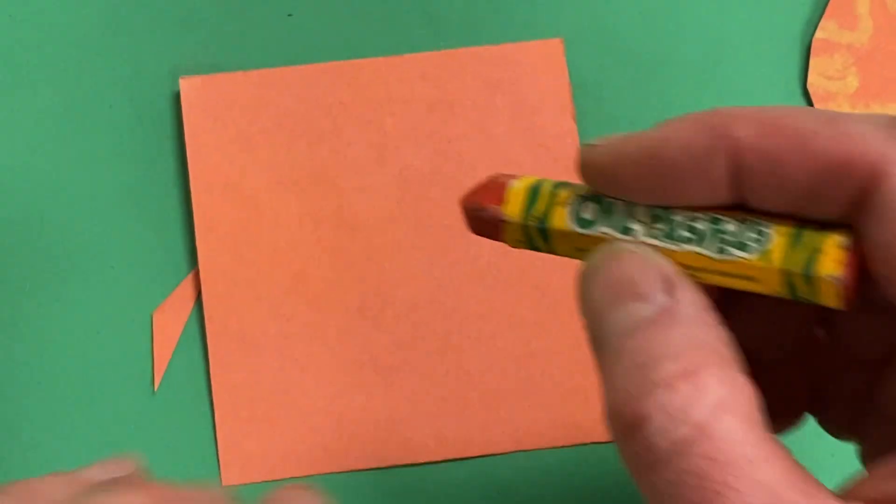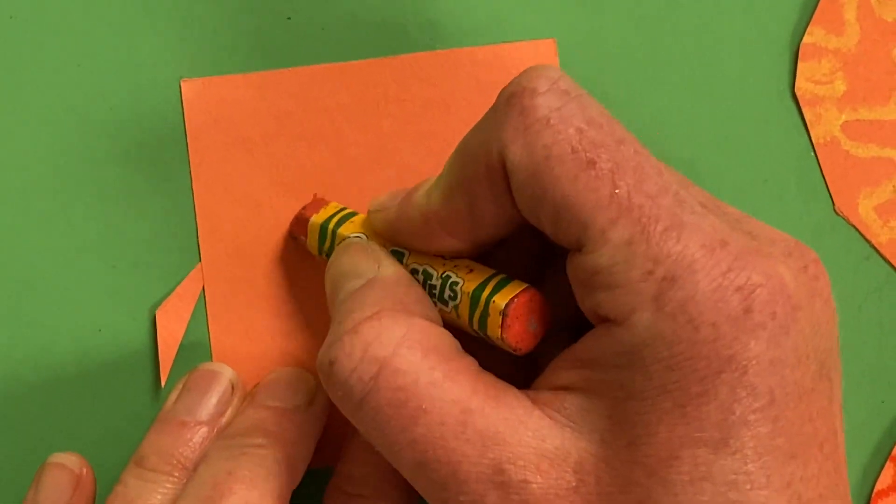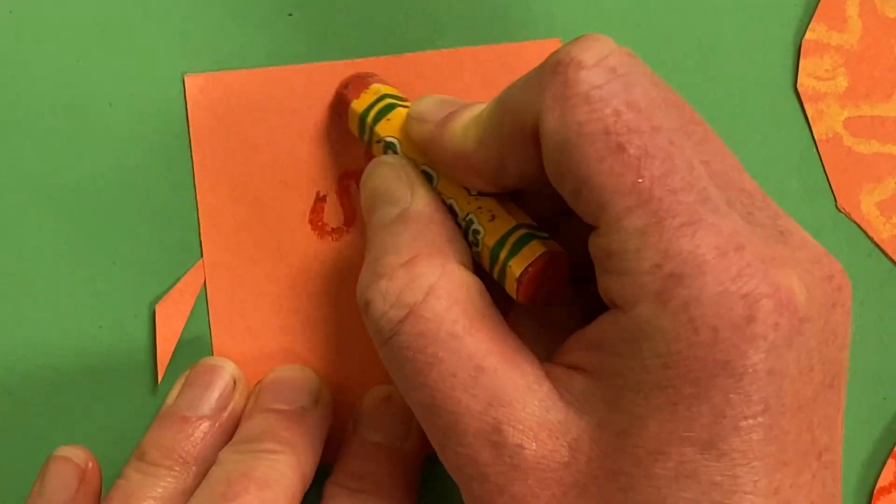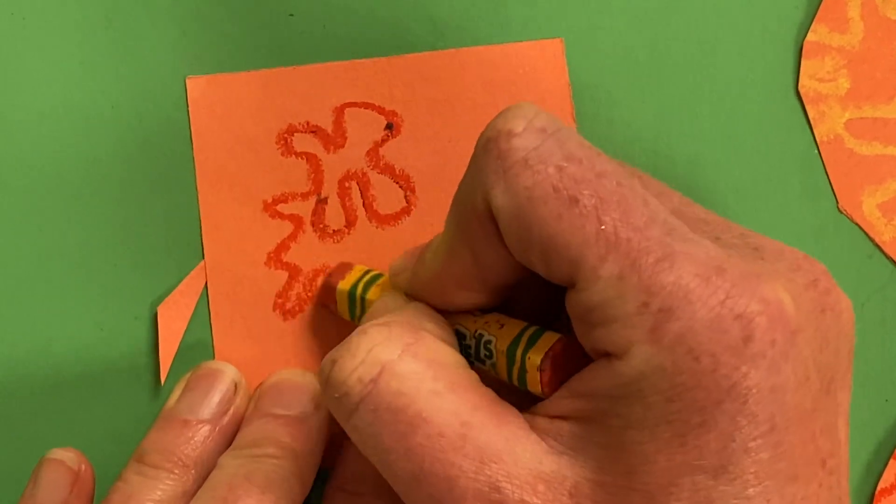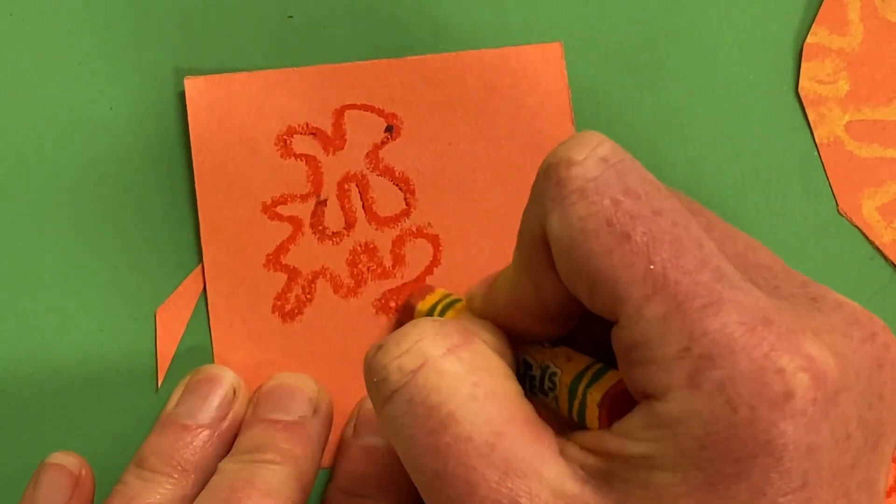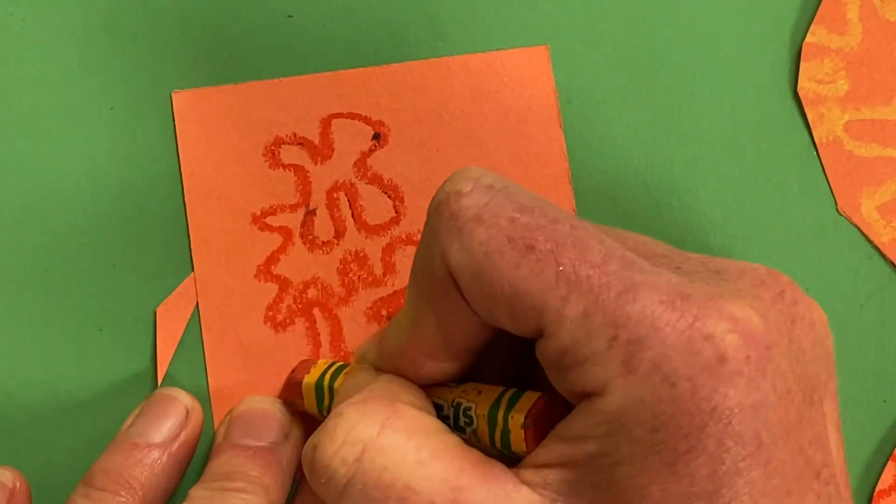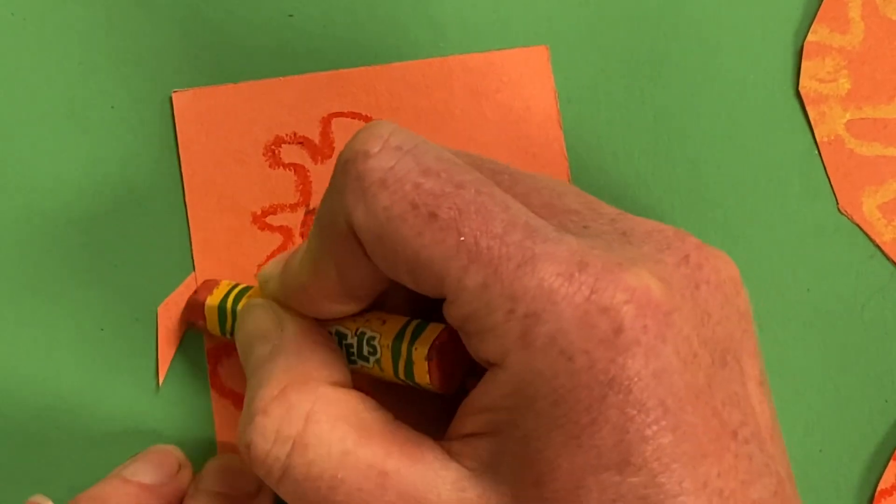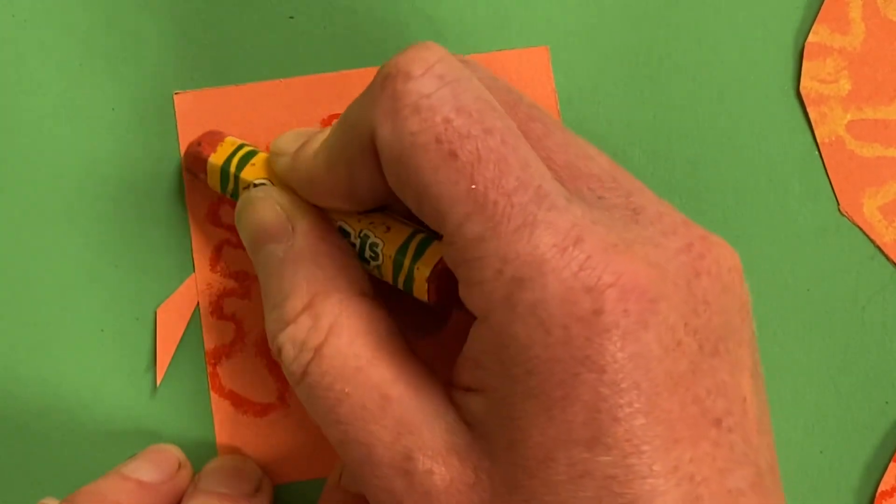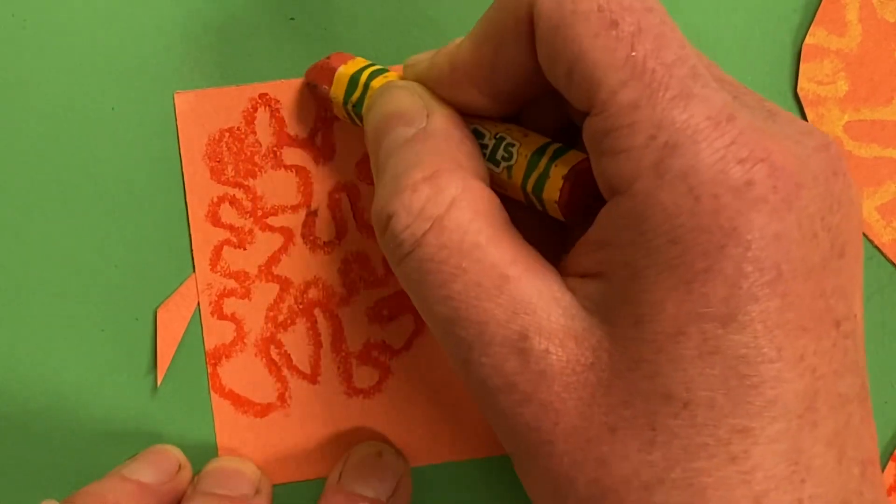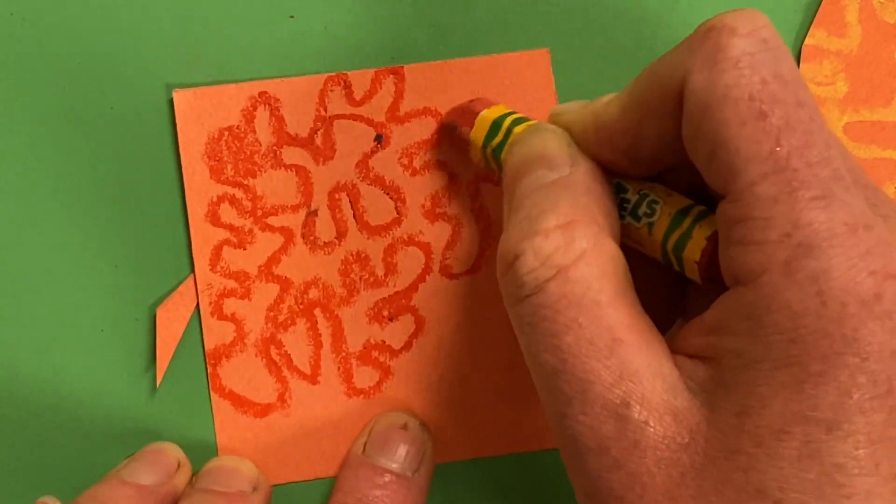Then you're going to pick a spot to start, and you're going to be drawing a wiggling, jiggling line that's continuous. You are not going to pick up that oil pastel until you're all done. So filling all those spaces.